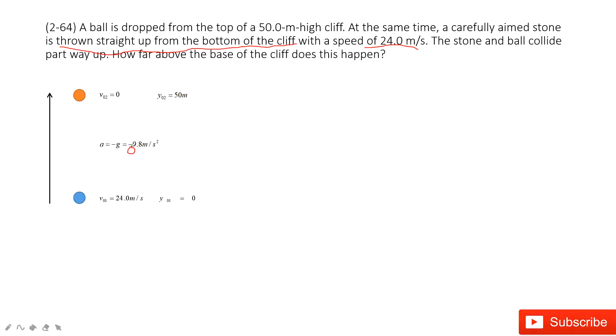It asks how far above the base of the cliff does this happen? That means the first object moves there, the second object moves there, they meet each other. When they meet, their positions are the same.